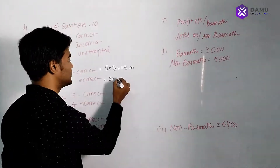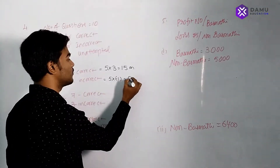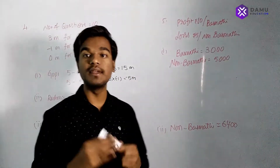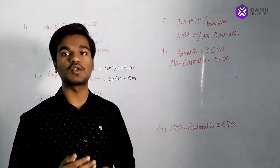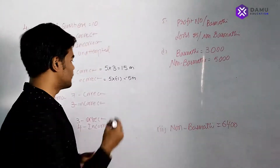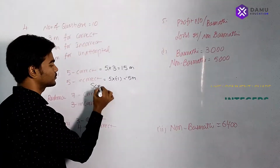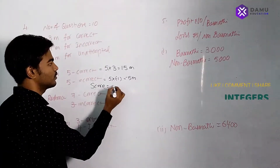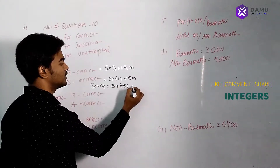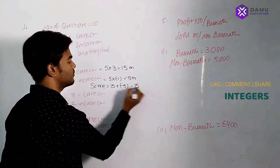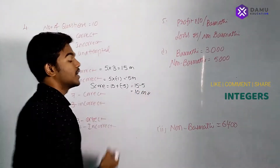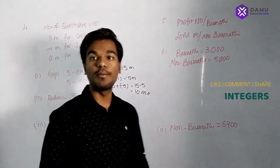So the incorrect marks will be minus 5 marks. What is Goby's score? We just add all the marks: 15 plus (minus 5), that is 15 minus 5, so Goby's marks is 10 marks.